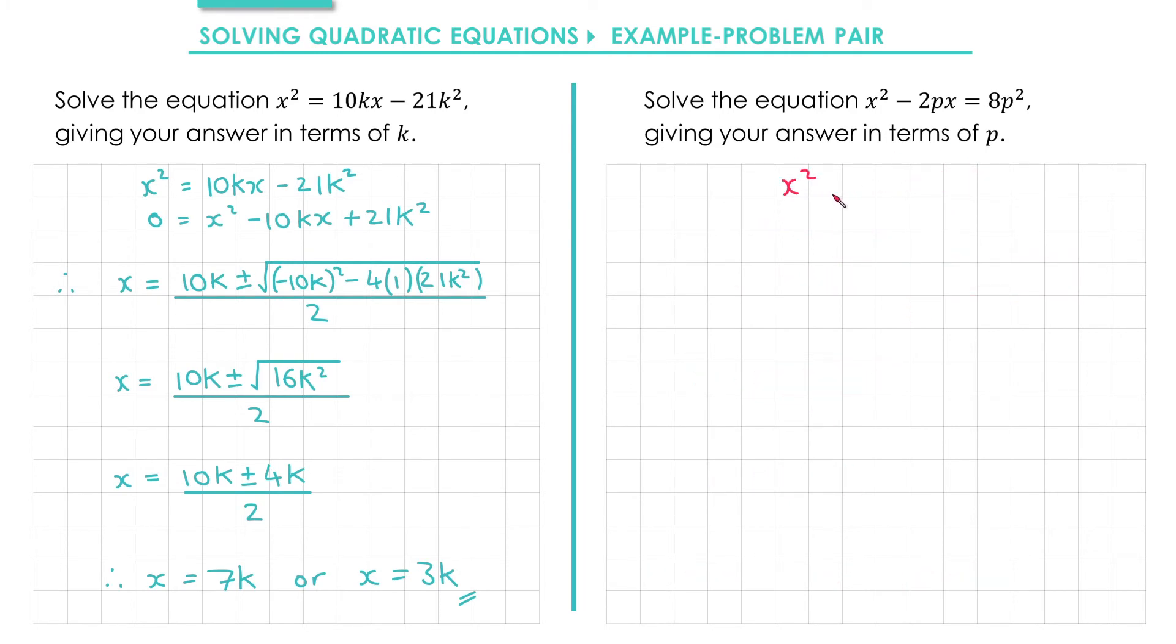OK, so we have x squared minus 2px equals 8p squared. Subtracting 8p squared from both sides gives us x squared minus 2px minus 8p squared equals 0. Applying the quadratic formula, we get x equals minus b. b is already negative, so that makes it 2p, plus or minus the square root of b squared. So minus 2p squared minus 4 times a, which is 1, times c, which is minus 8p squared, all divided by 2a, which is 2.